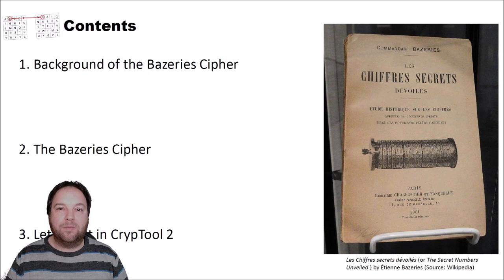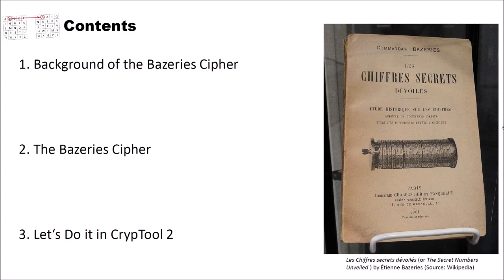I structured this video into three different parts. First we will have a look at the background of the Bazeries cipher. Then I will explain how the Bazeries cipher works, what its key space size is, and what its unicity distance is. And finally, of course, we will do it in CrypTool 2, we will encrypt and decrypt using a new Bazeries cipher component of CrypTool 2.